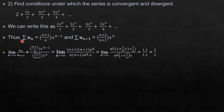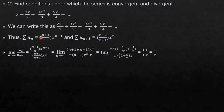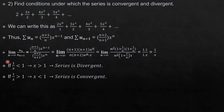As before, we compute the limit of u_n upon u_{n+1}. After cancellation we are left with 1/x. Now x is the variable — everything depends on its value. By the ratio test, if the limit is less than 1 the series is convergent; if greater than 1 it is divergent. So 1/x less than 1 implies x greater than 1, meaning for x greater than 1 the series is divergent.